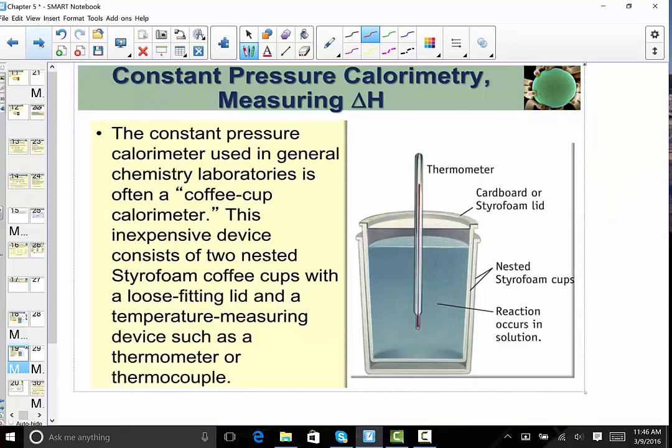We use a constant pressure calorimeter, we call it a foam cup calorimeter, and literally that's what you're going to use in your experiment, or two coffee cups kind of nestled together with a lid. A foam cup calorimeter is an inexpensive device, and it consists of just nested styrofoam coffee cups with a loose-fitting lid, and we just put our thermometer into the system to measure temperature change.